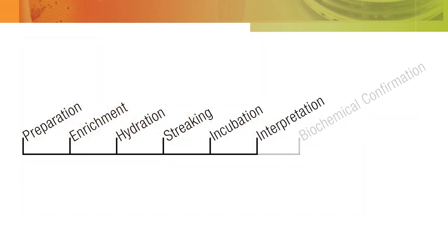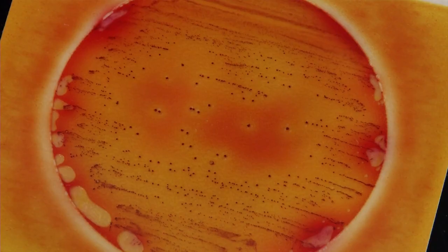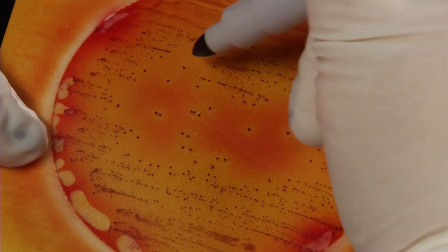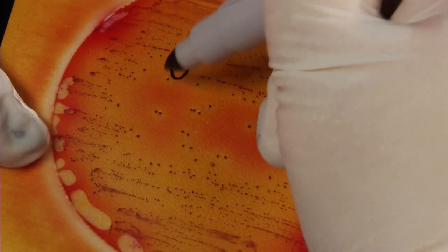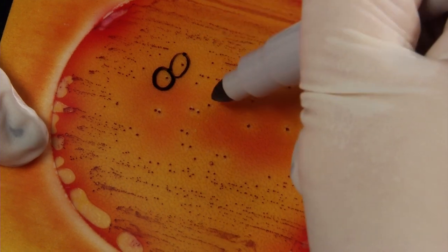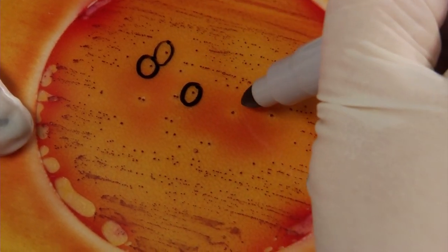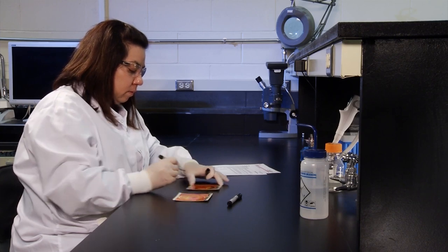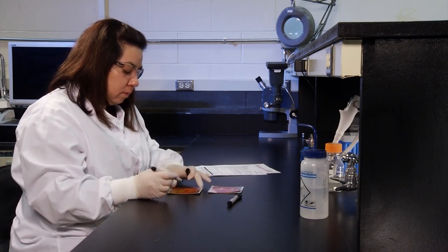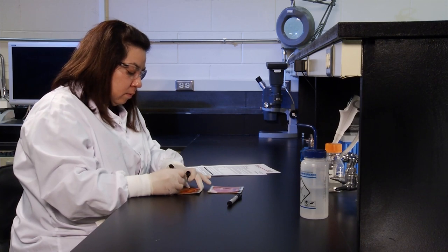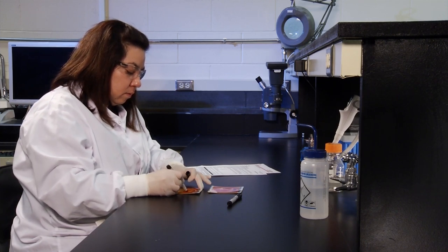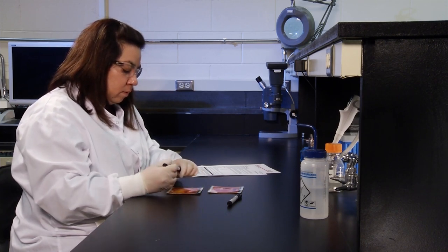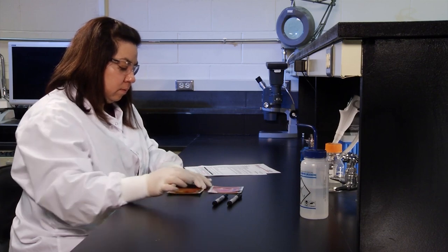If you have found presumptive positive salmonella colonies, perform the following steps. First, take out a permanent ultrafine tip marker and circle a minimum of five isolated presumptive positive salmonella colonies on the top film. Second, biochemically confirm all circled salmonella presumptive positive results using the 3M PetriFilm Salmonella Express Confirmation Disc.